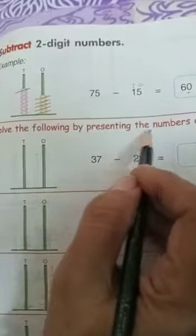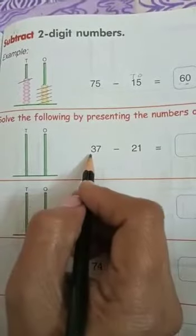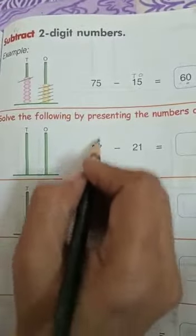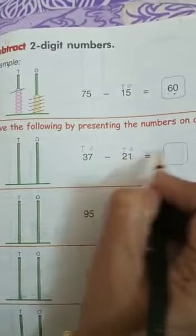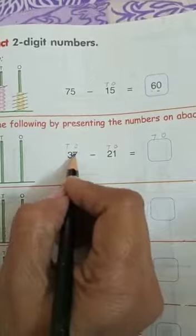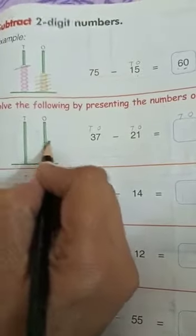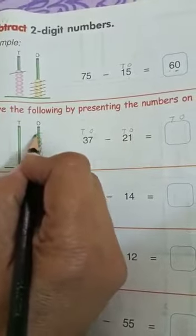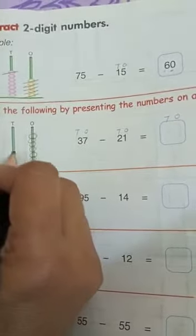Now solve the following by presenting the numbers on the abacus. You have to subtract these numbers on abacus. First problem: 37. You can write here 1's, 10's, 1's, 10's, 1's, 10's. Now 37: 7 ones — 1, 2, 3, 4, 5, 6, 7. How many 10's? 3. 1, 2, 3.